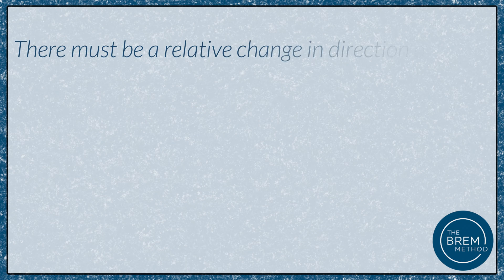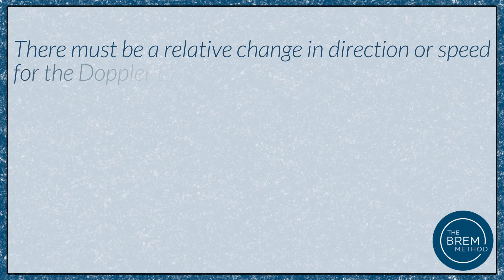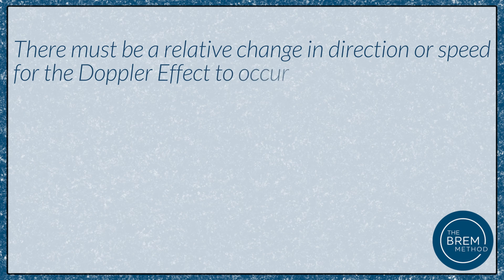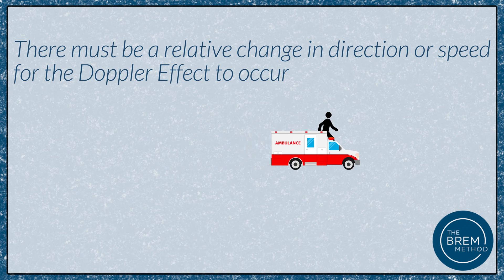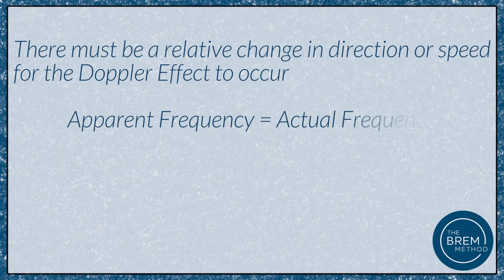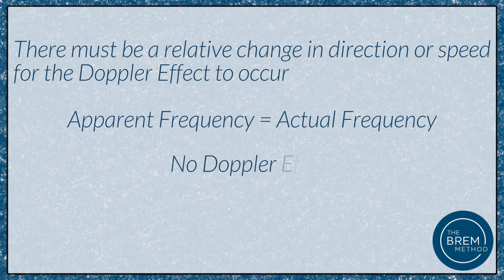In both of these examples, notice the key feature: the ambulance is either moving towards you or away from you. There's a relative change in either direction or speed in order for the Doppler effect to occur. If you're moving at the exact same speed as the ambulance in the same direction — running right alongside it — you are not going to experience any change in frequency. The apparent frequency will equal the actual frequency: no Doppler shift.